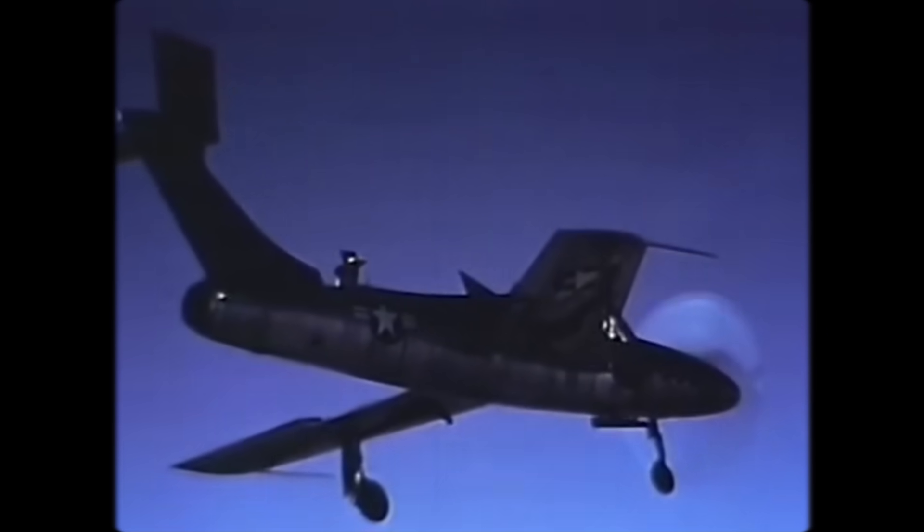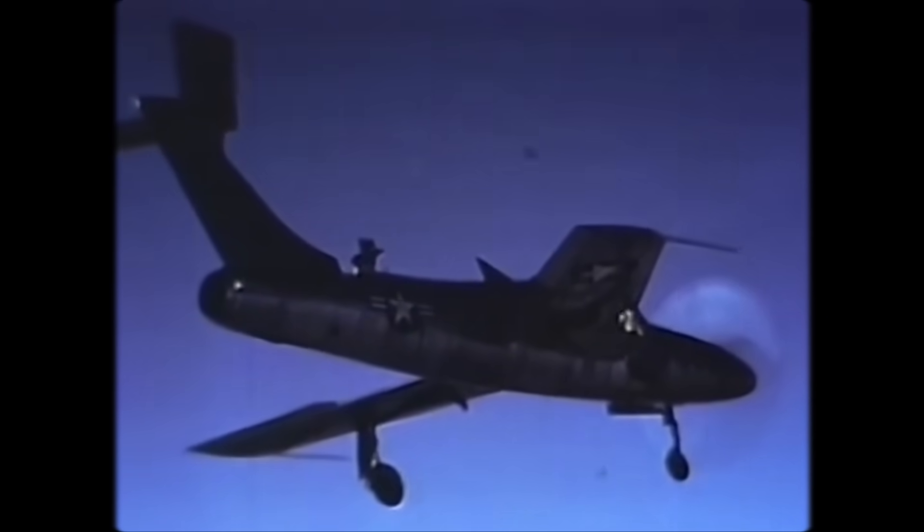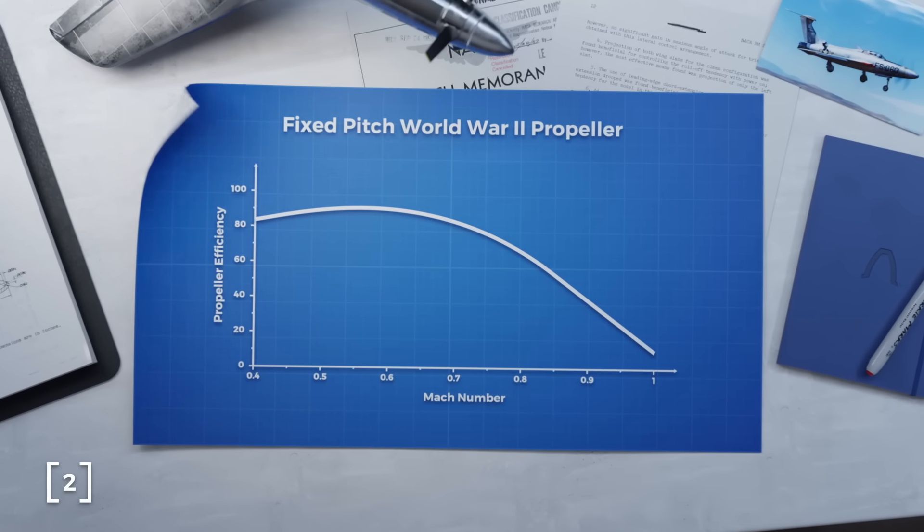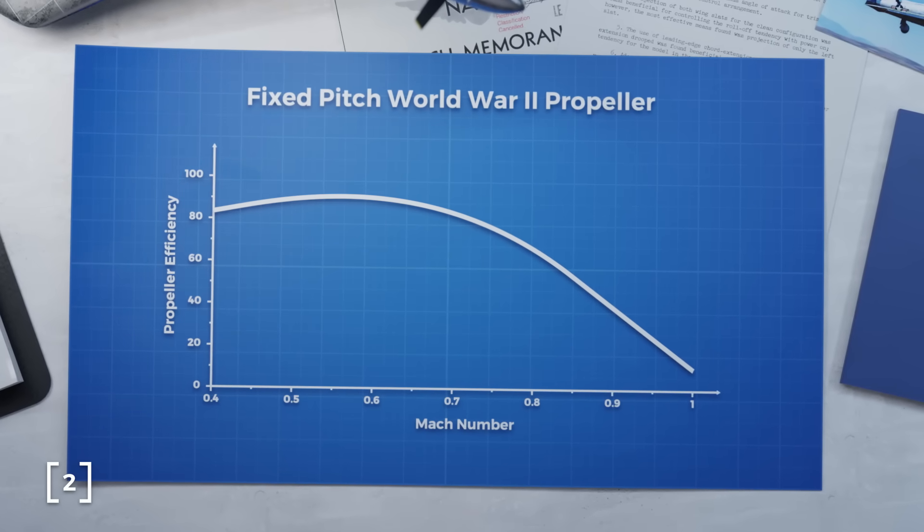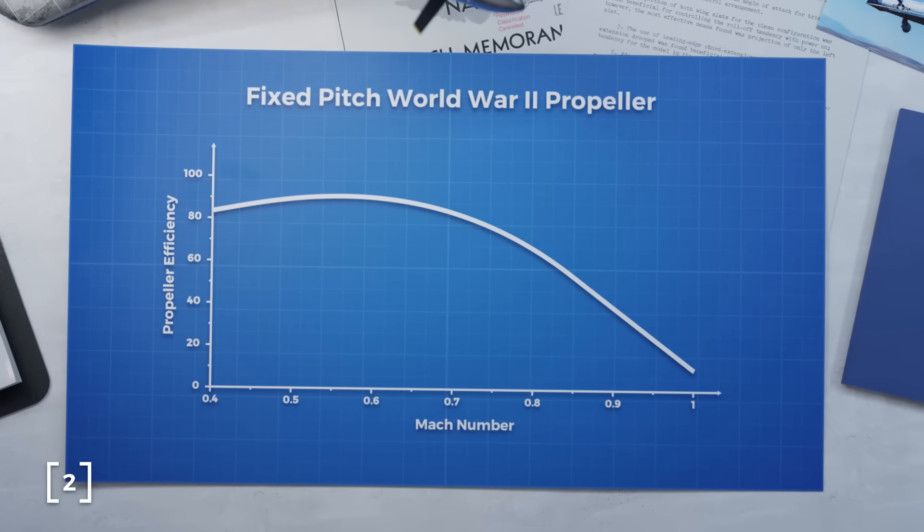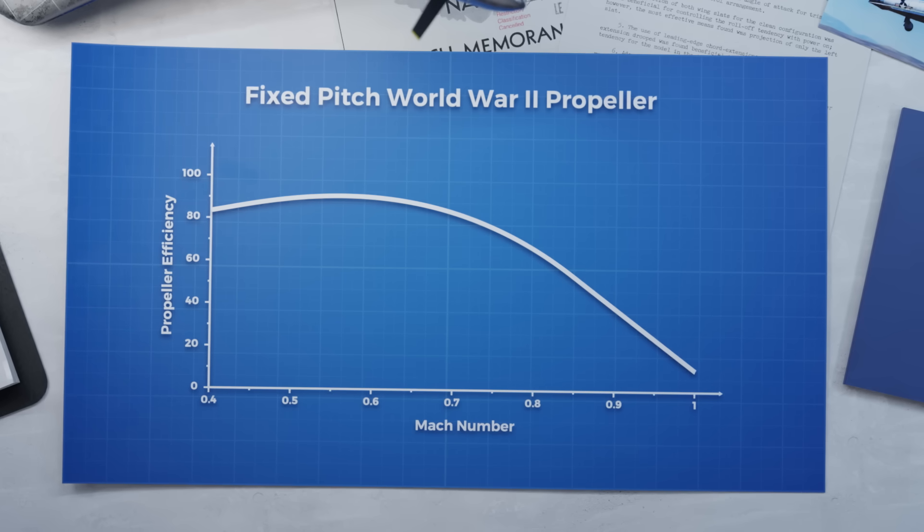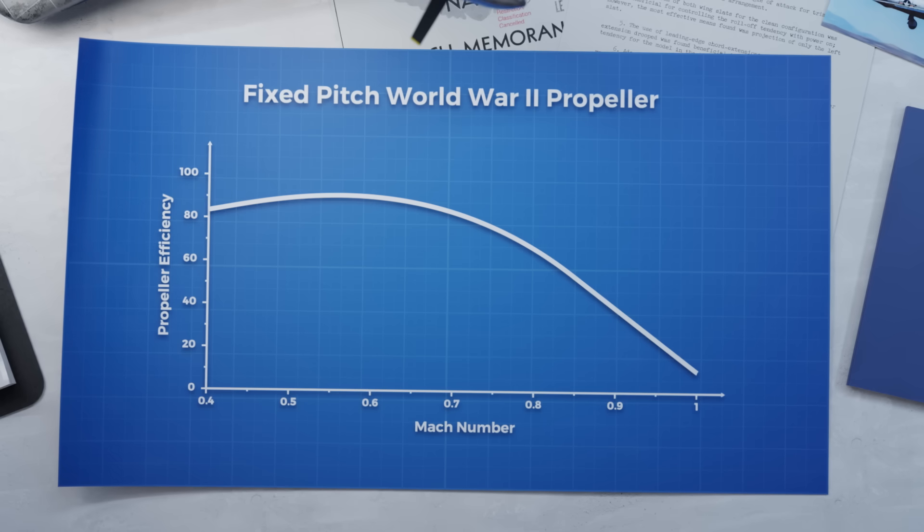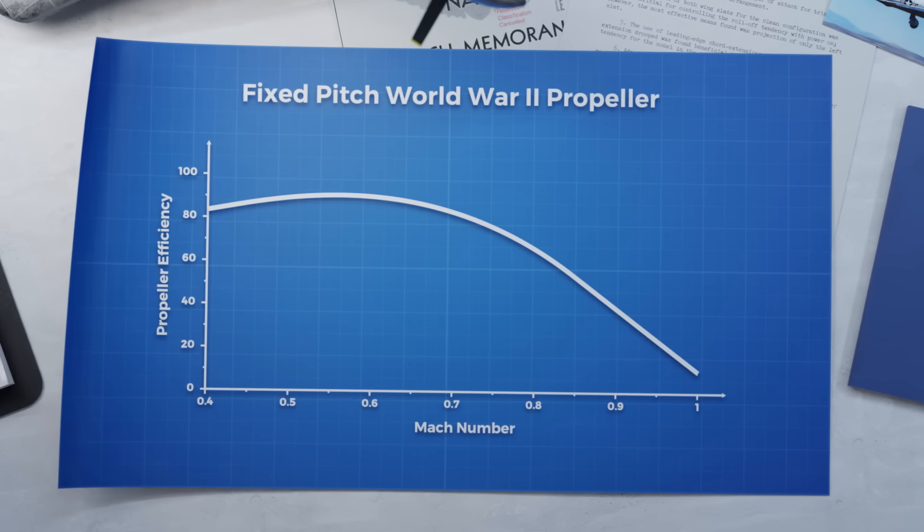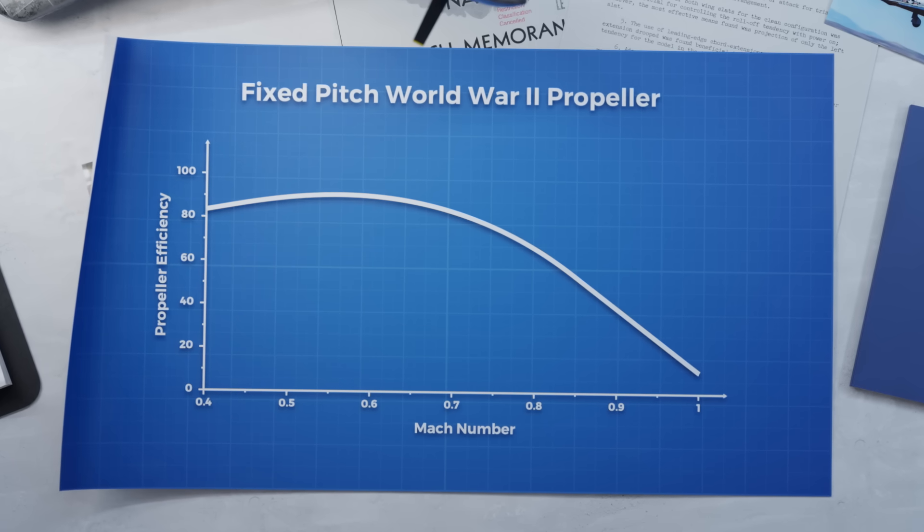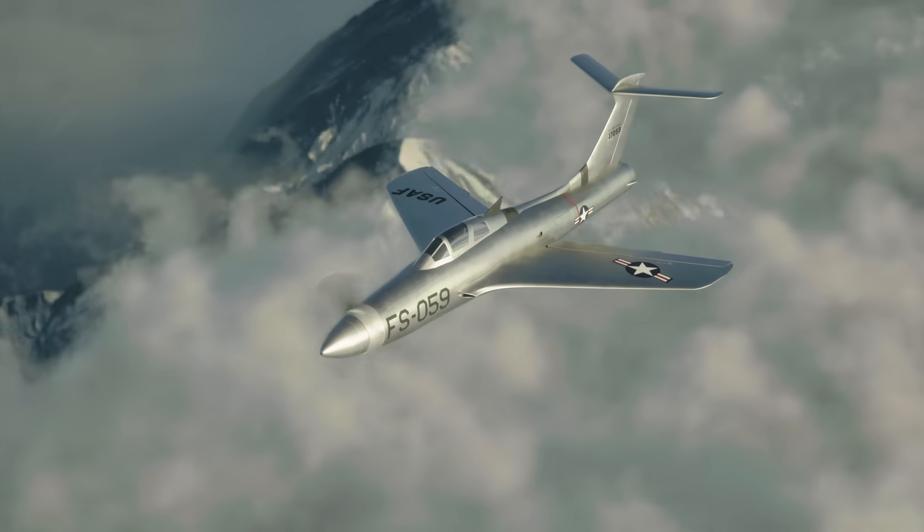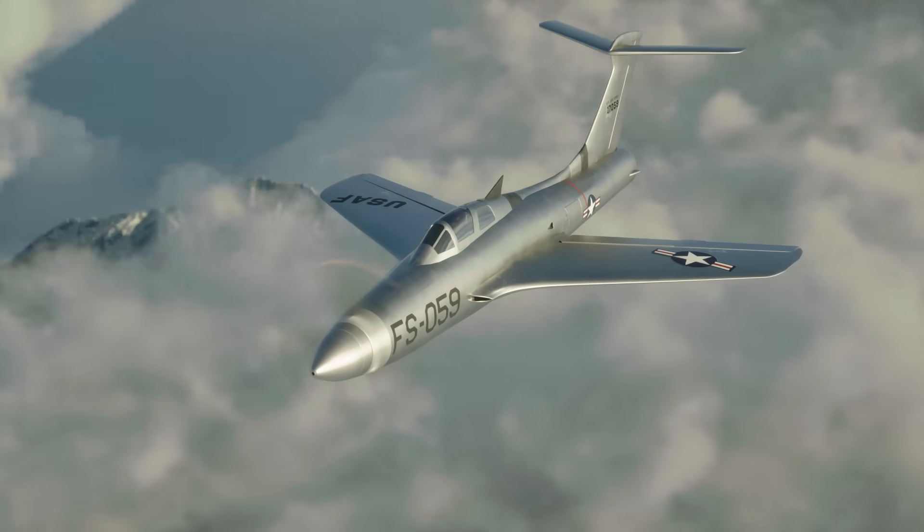The propeller efficiency can be thought of as the ratio of power in the form of thrust produced by the propeller to the power actually produced by the engine. This graph shows the typical propeller efficiency profile for a fixed pitched World War 2 aircraft relative to speed. We can see that the propeller efficiency rapidly plummets at higher speeds as air becomes more unstable over the propeller. Propellers spinning at supersonic speeds with this kind of efficiency curve are untenable. If propeller planes were to compete with jets, engineers needed a way to prevent this drop off in efficiency.